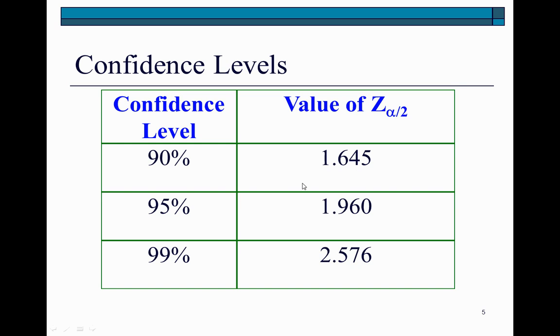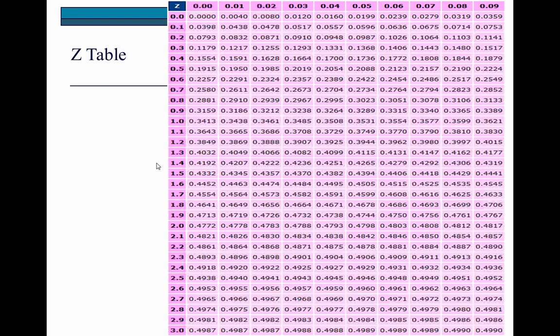And again, to find the z value for a 90% confidence level, you would remember that 0.9, one half of it, would be 0.45. And so you would have to go to the z table and look up the z value corresponding to an area of 0.45. And it's somewhere right here. And that z value would be 1.64 or 1.65, or you can interpolate between these two and find it to be 1.645.